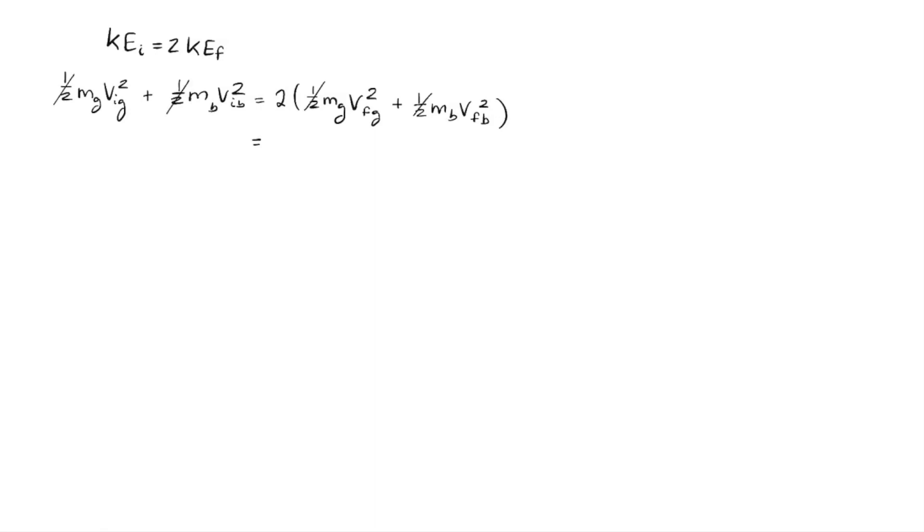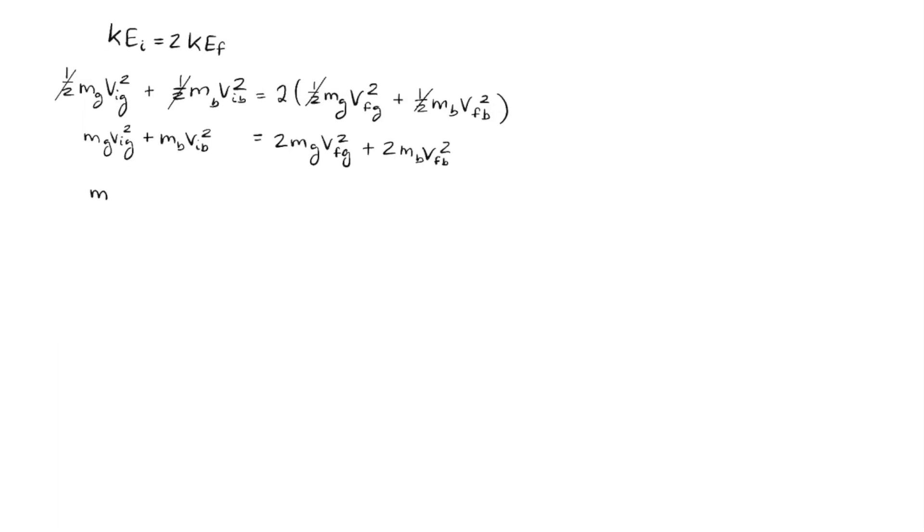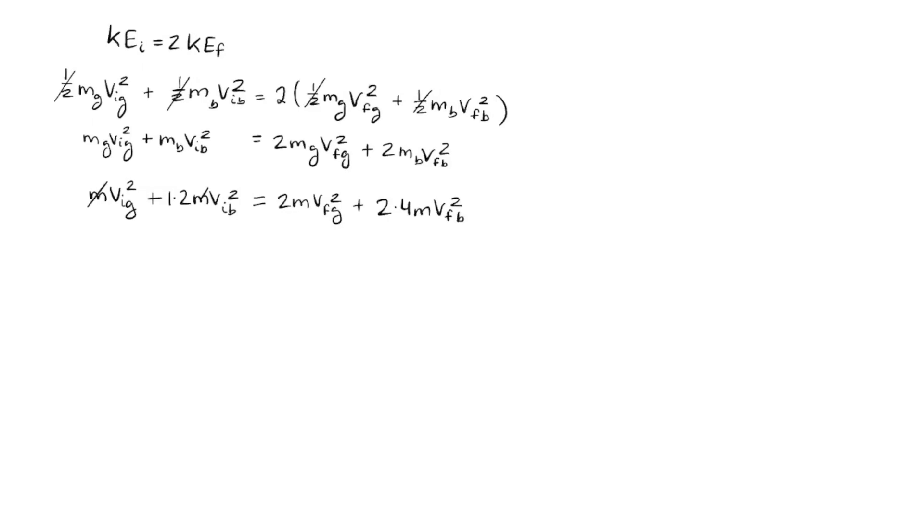Now we can just cancel off all of the one-halfs and then distribute the two into the final part. So we can copy the first part down and the second part times 2. Now we can plug in our values for mass of g and mass of blue as m and 1.2m. And once again, we can cancel off all of the masses because we were just using m as a placeholder.